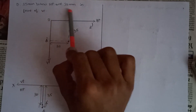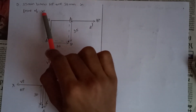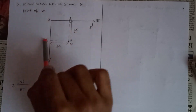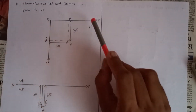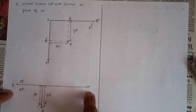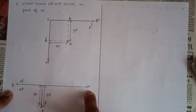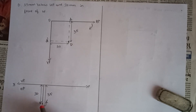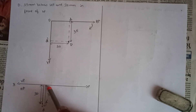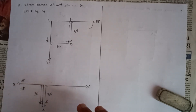Now point D: it is 35 mm below HP and 30 mm in front of VP — this means it is in the fourth quadrant. Again, rotate HP 90 degrees clockwise. When represented on the XY line, the projections overlap on the same side — point D-bar is 30 mm below the XY line, and point D is 35 mm below the XY line.